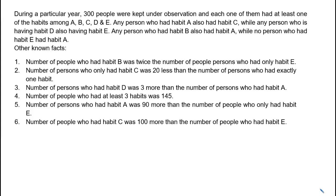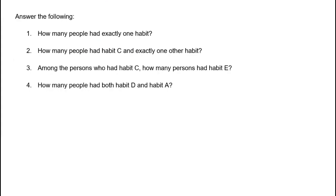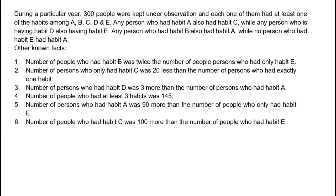Hello everyone, let's look at this DLR set. Let's take a screenshot of this data — there are four questions. Try this set by yourself, then come back to this video. During a particular year, 300 people were kept under observation and each one of them had at least one of the habits among A, B, C, D, and E. It looks a bit complex, but after reading this we know this is a Venn diagram question.